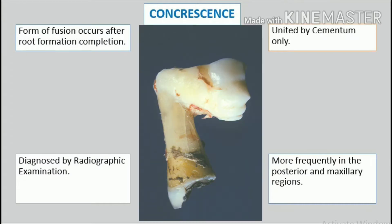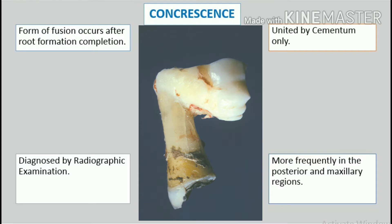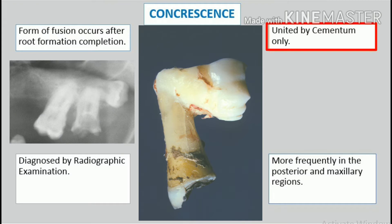Concrescence. Concrescence of teeth is actually a form of fusion which occurs after root formation has been completed. In this condition, teeth are united by cementum only. It is thought to arise as a result of traumatic injury or crowding of teeth with resorption of the interdental bone, so that the two roots are in approximate contact and become fused by the deposition of cementum between them.